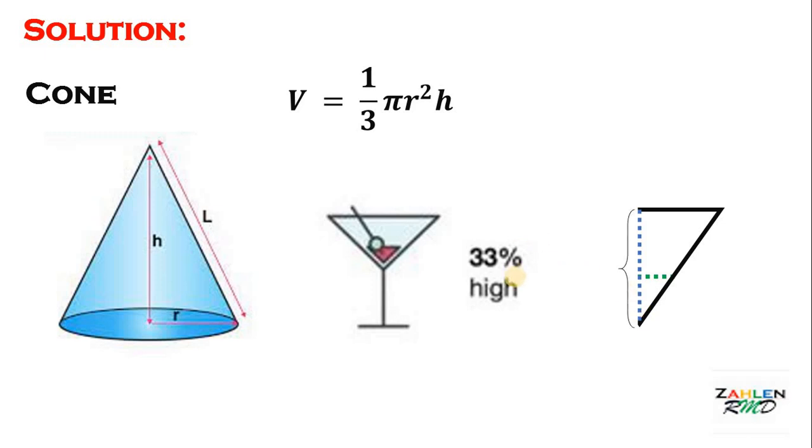Next, let the height be equal to h. And the length of this segment must be equal to 0.33h because it is 33% high. Next, let r be the radius of the cone. Next, here's the water level. The question is, what is the radius of the water level?